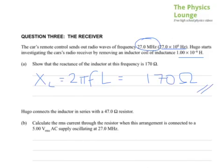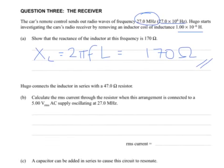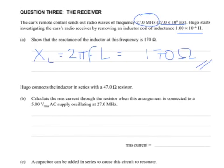Hugo connects the inductor in series with a 47 ohm resistor. Calculate the RMS current through the resistor when this arrangement is connected to 5 volt AC supply, oscillating at 27 MHz. That means we can assume the reactance is the same for the inductor. Overall, we're trying to find the current, and it's the RMS current. So that's going to be I equals V RMS. So I RMS equals V RMS over the total impedance of the circuit.